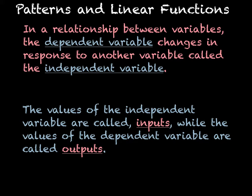In a relationship between variables, the dependent variable changes in response to another variable that we call the independent variable. In general, we call x the independent variable and y the dependent variable. It's not always the case because sometimes we use other letters, but that's the general idea. So x would be the independent and y would be the dependent.